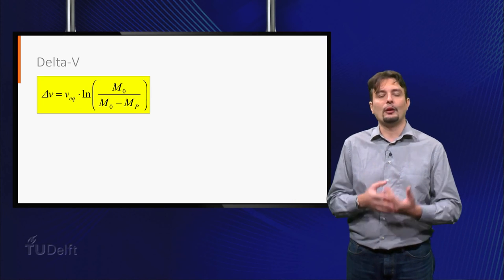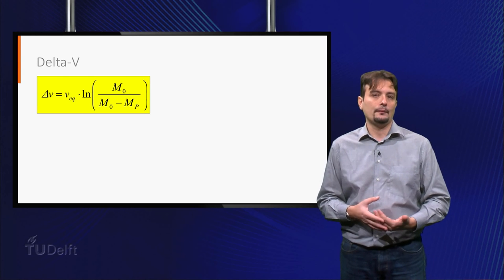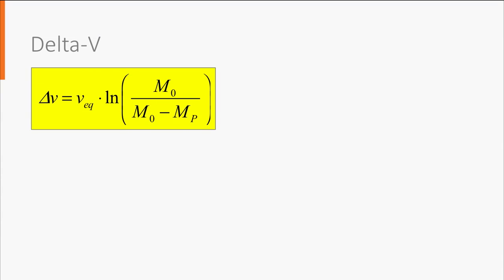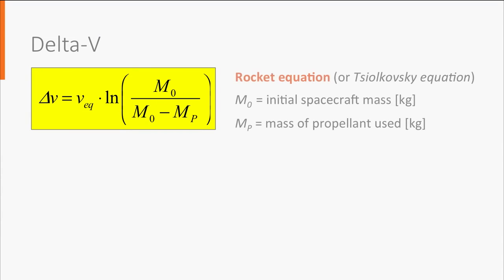The last important performance parameter is the delta V, usually calculated by means of this equation. This is known as rocket equation, or Tsiolkovsky equation from the name of the scientist who derived it for the first time.